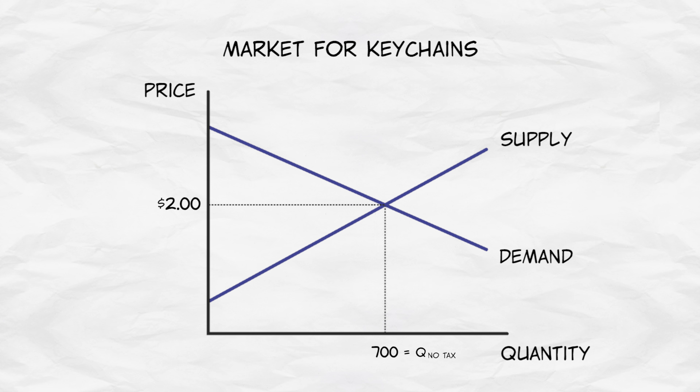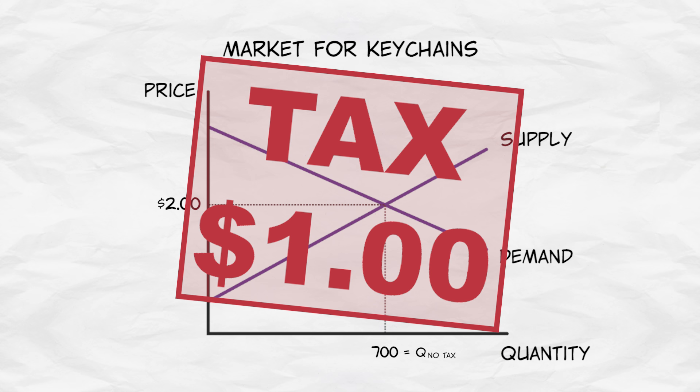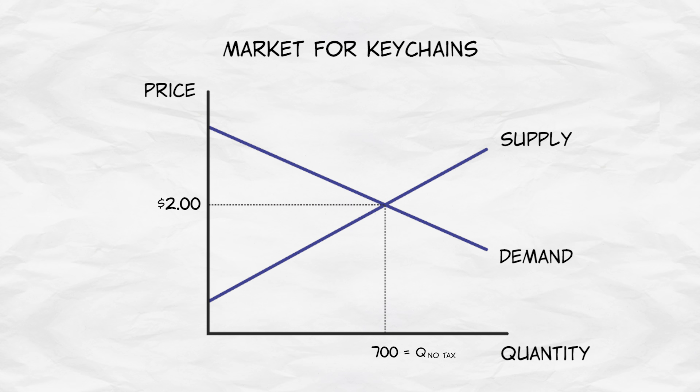Now, suppose the government imposes a tax of $1 on this good. And let's say that this causes the new price for the buyer to be $2.50. At this new price, there are 500 trades, 200 fewer than before.